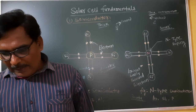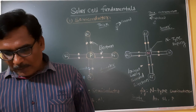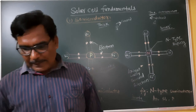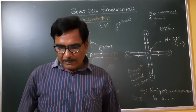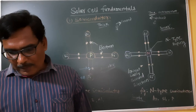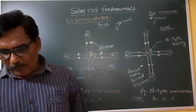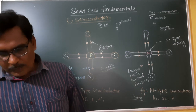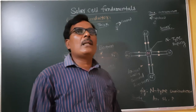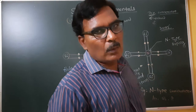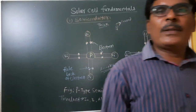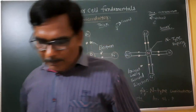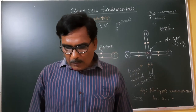An external electrical circuit is completed by connecting electrodes and electrons flow in the closed external circuit from the N-type terminal to the P-type terminal, from negative to positive. The direction of conventional current flows from positive to negative, while electrons always travel from negative terminal to positive terminal.